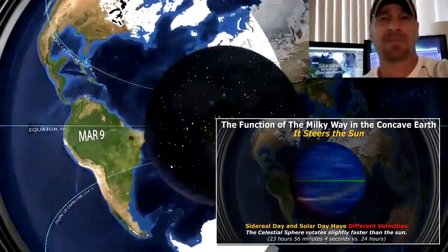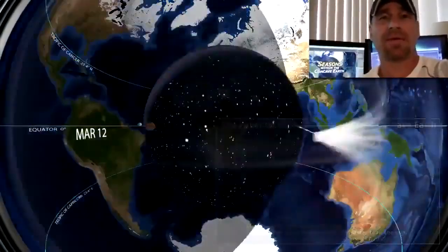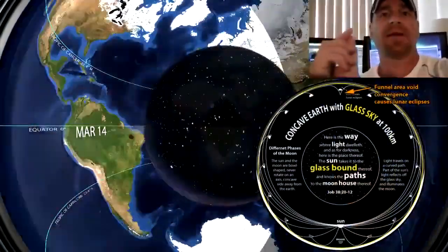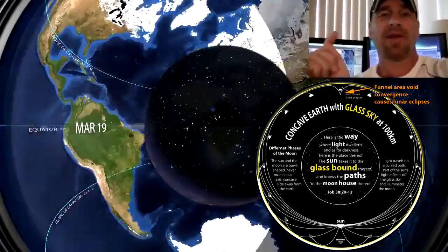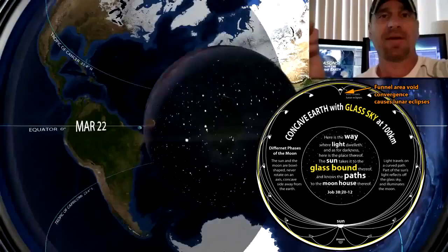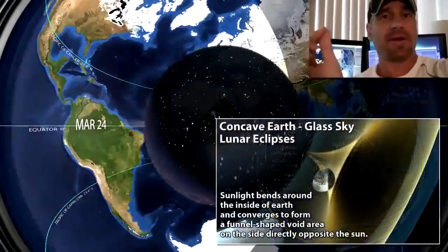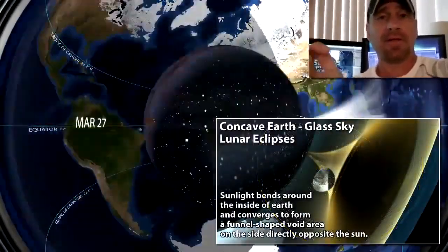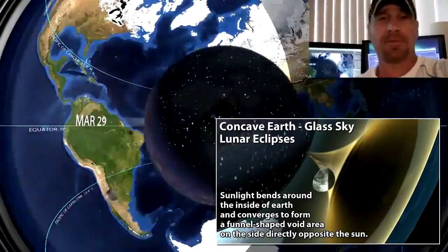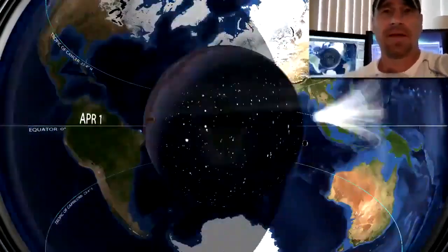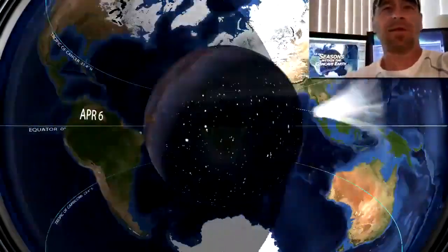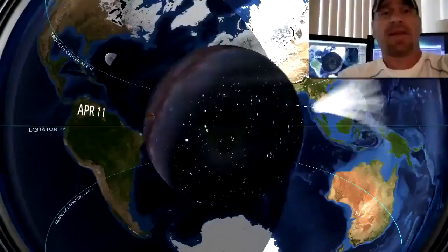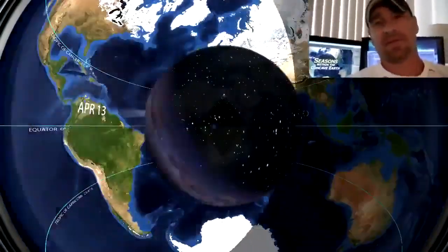Everything works within the concave Earth. Sunlight is bending around the inside of the Earth; that's how we get lunar eclipses. There's an opposite funnel-shaped void area opposite the Sun. When the moon goes through that void area, it gets eclipsed, or if they're south of that void area, it's just simply gonna be a full moon. So everything works in the concave Earth. You've seen that my animation here—I made it a wide angle so I wanted to include everything, so that's why it kind of looks kind of funky—but everything, it's Occam's razor: the simplest answer is always the best answer.